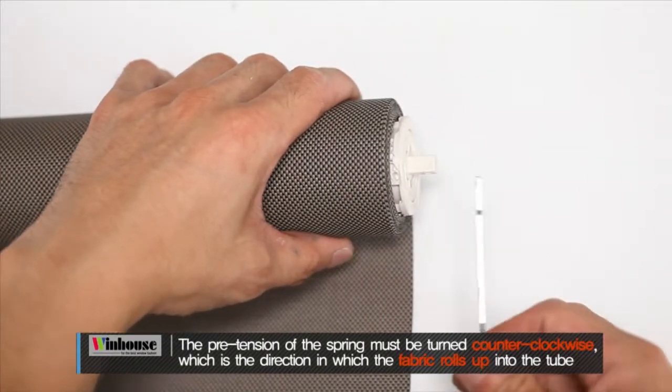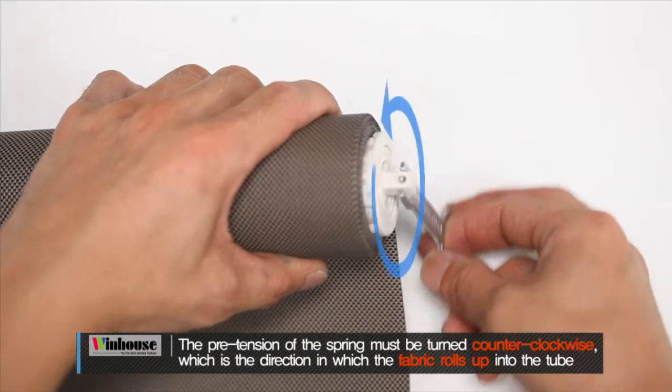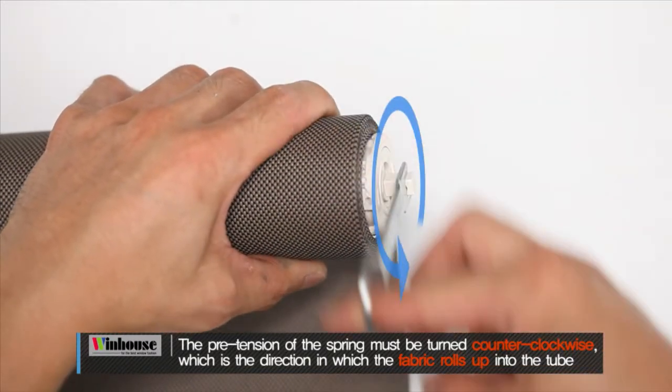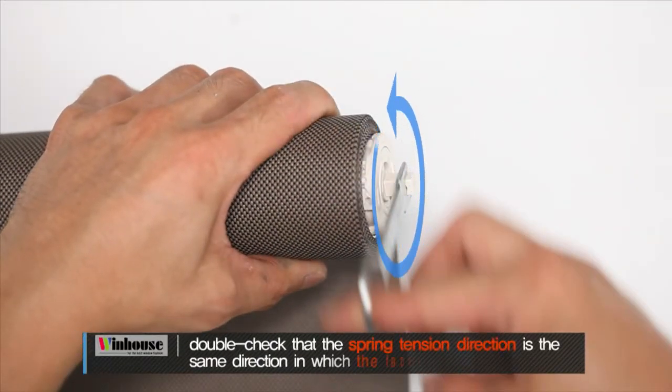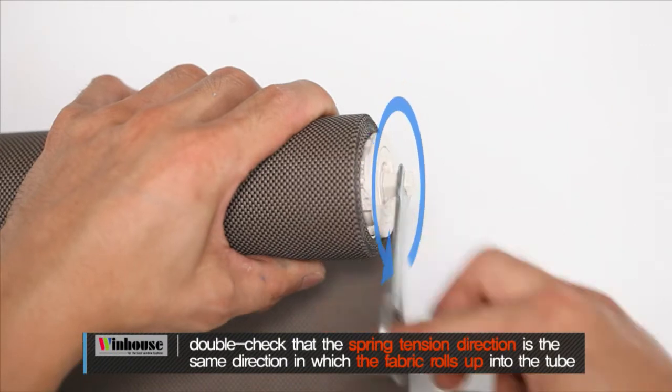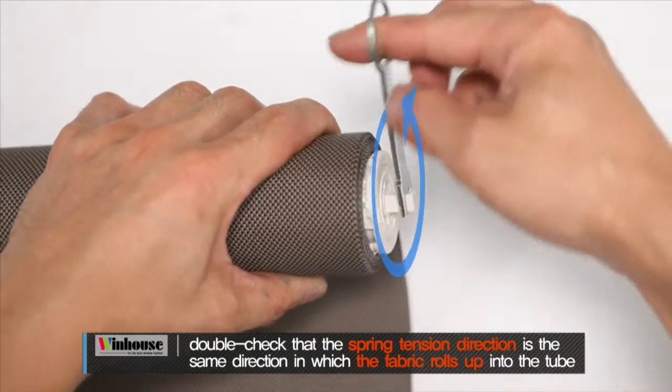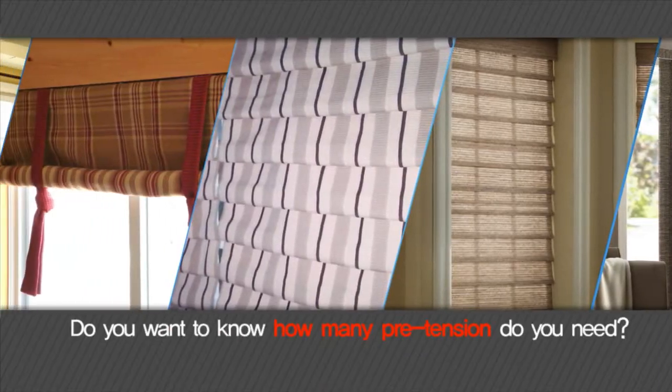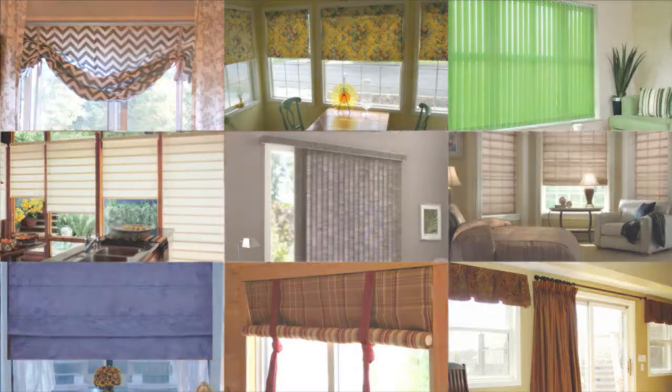The pre-tension of the spring must be in the same direction in which the fabric rolls into the tube. Important! Double check the spring tension direction to make sure that it is going in the same direction as the way in which the fabric rolls into the tube. How many pre-tension rotations are needed? See the tension table.